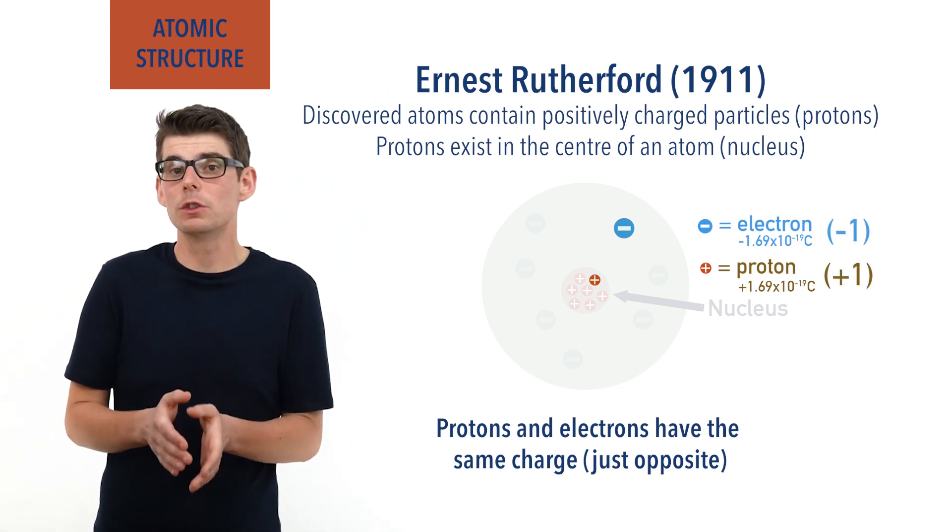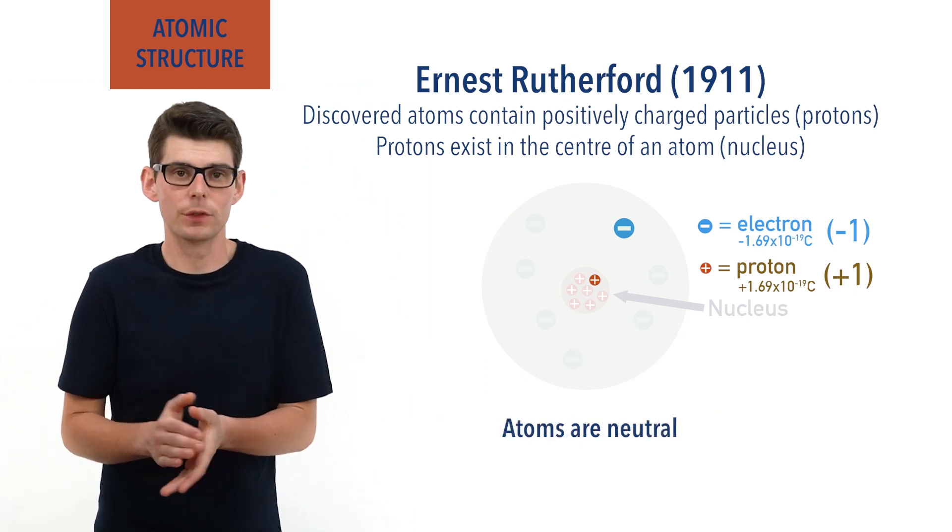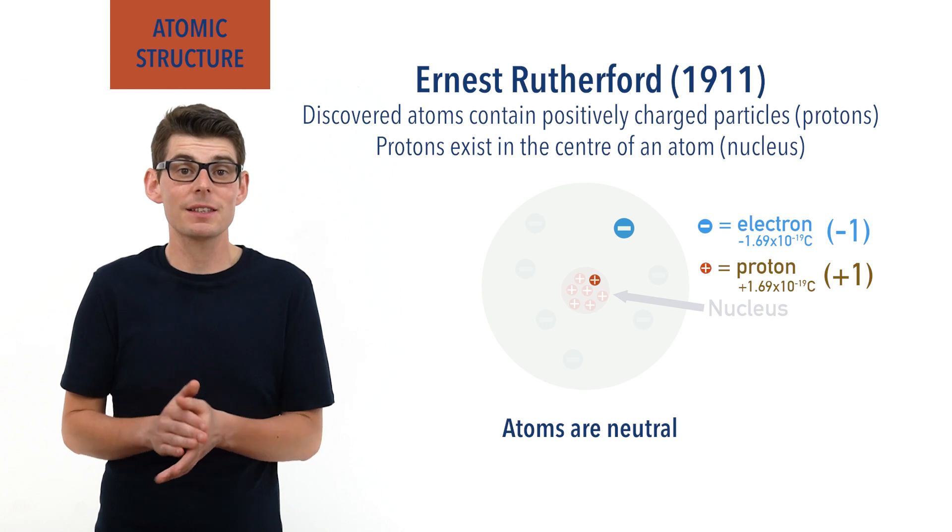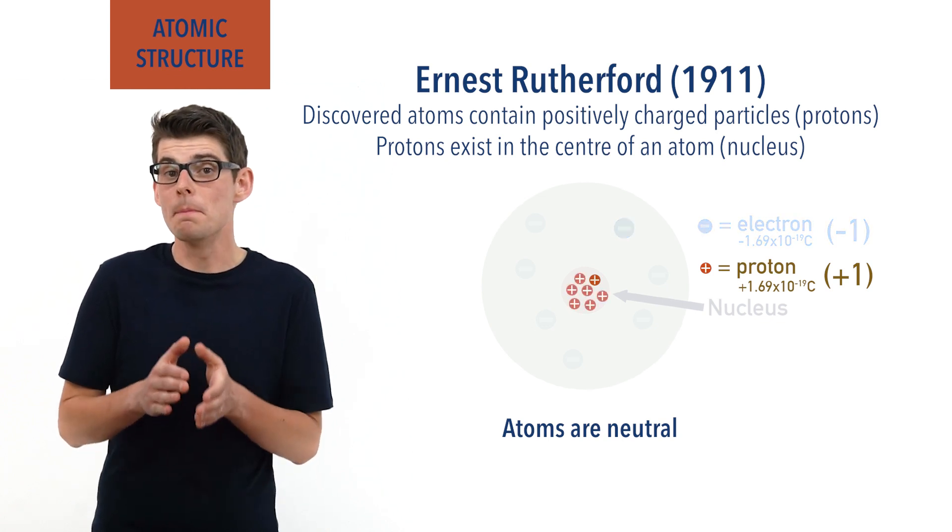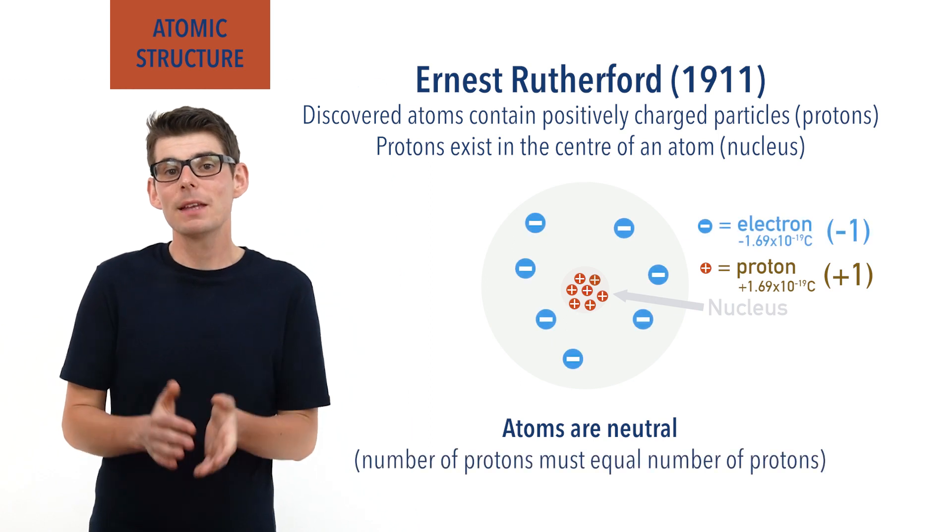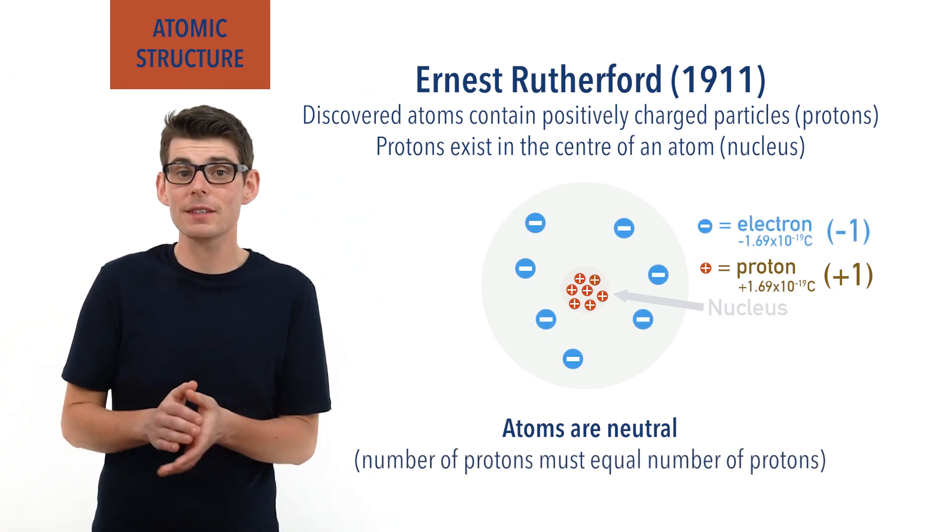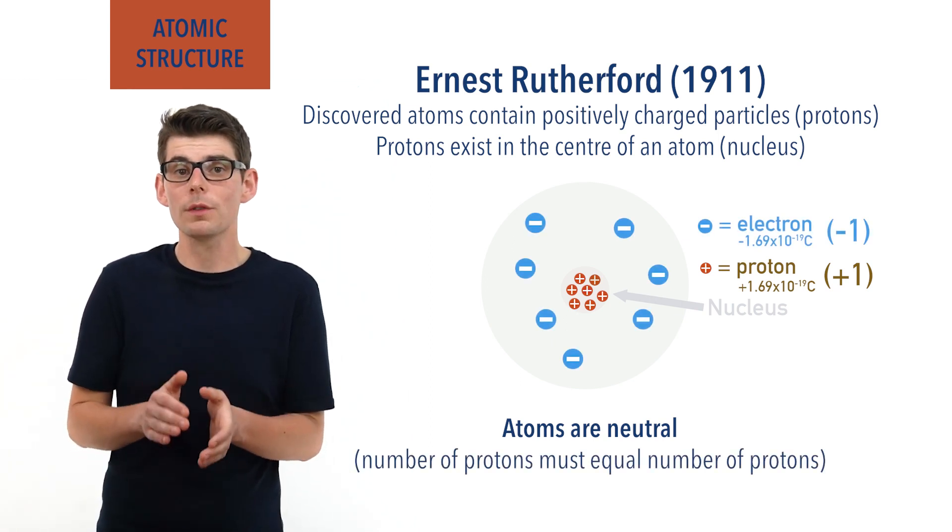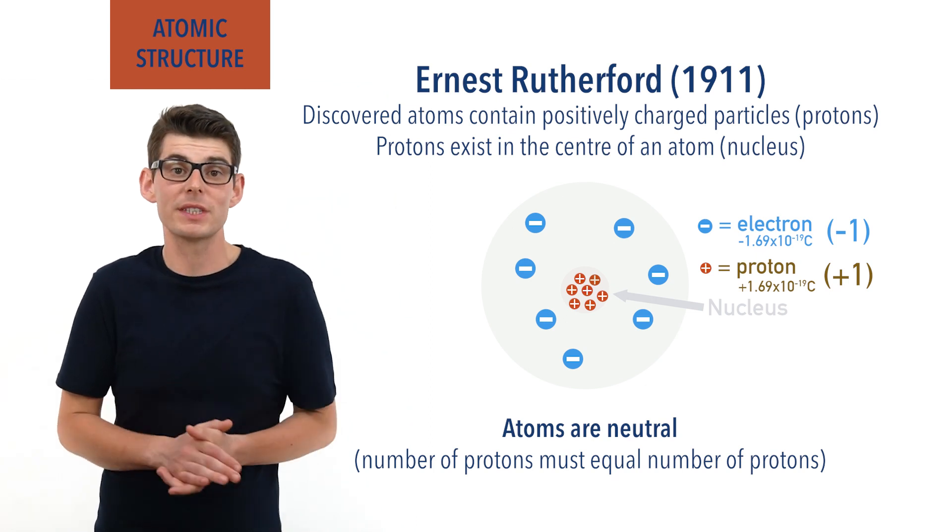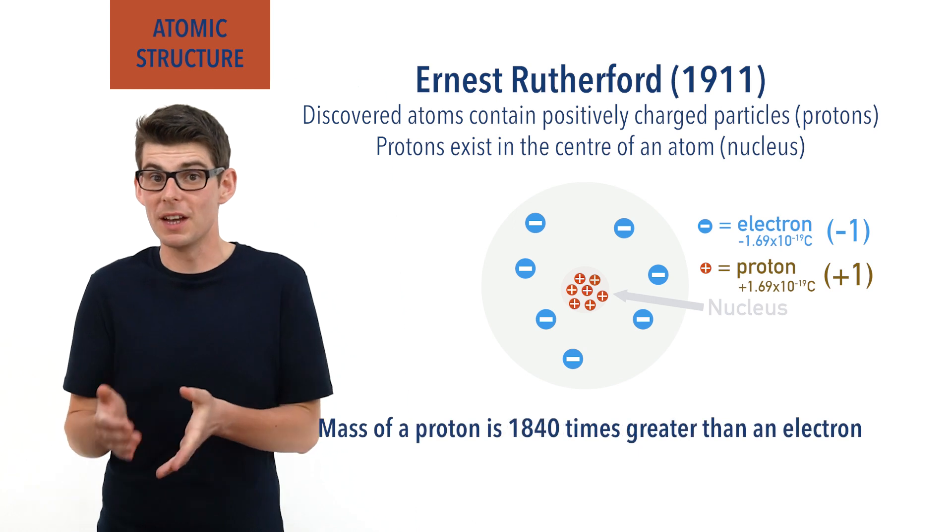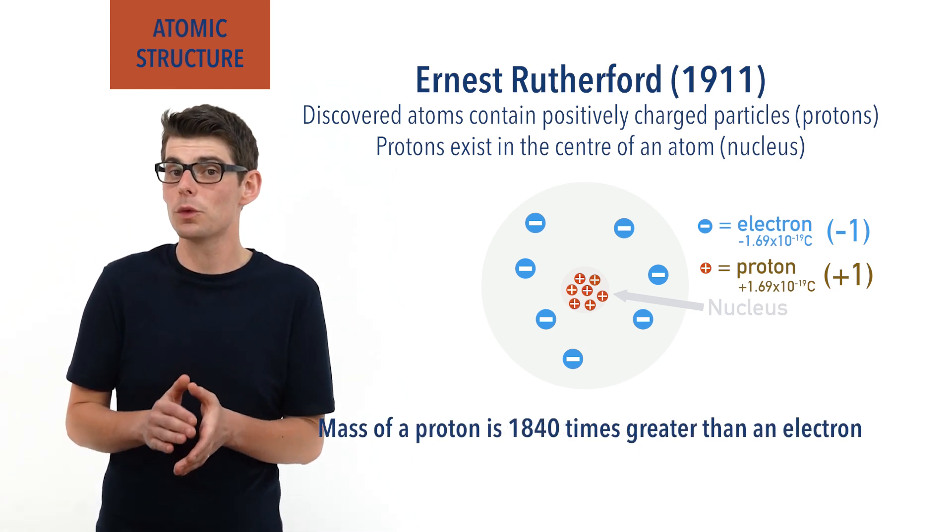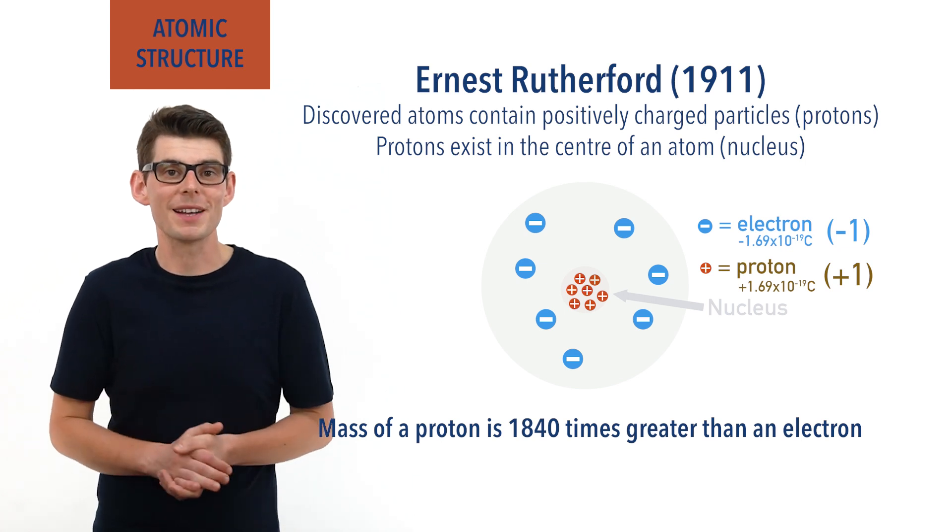As atoms were known to be neutral overall and have no charge, it made logical sense to conclude that in an atom, the number of protons must be the same as the number of electrons. It was also discovered that the mass of a single proton was 1840 times greater than the mass of a single electron. Or in other words, the mass of one electron is 1840 times smaller than the mass of one proton.